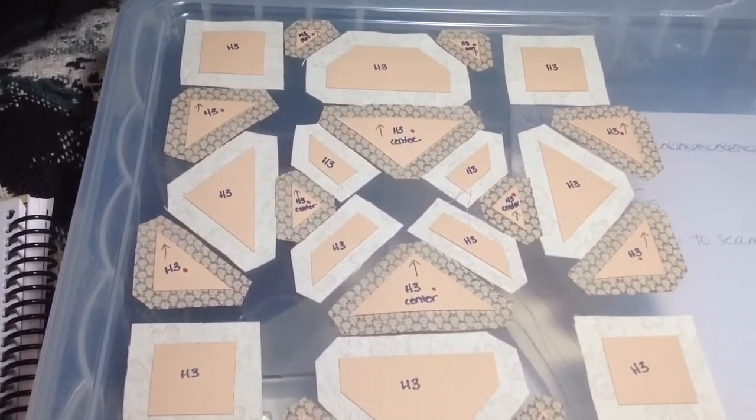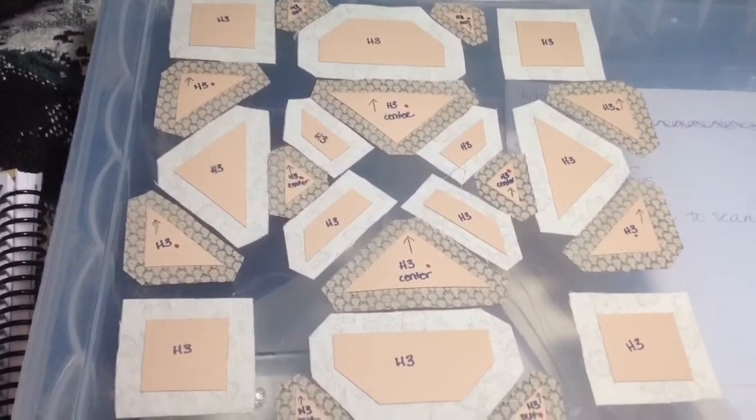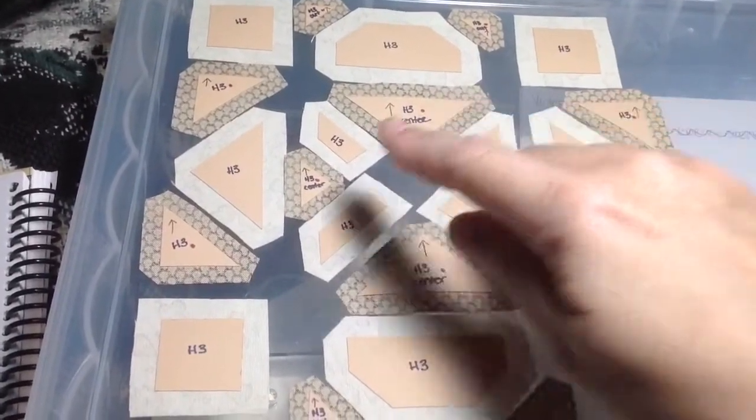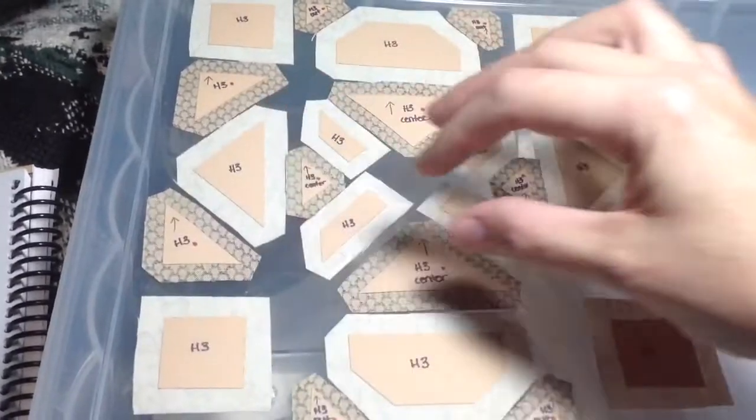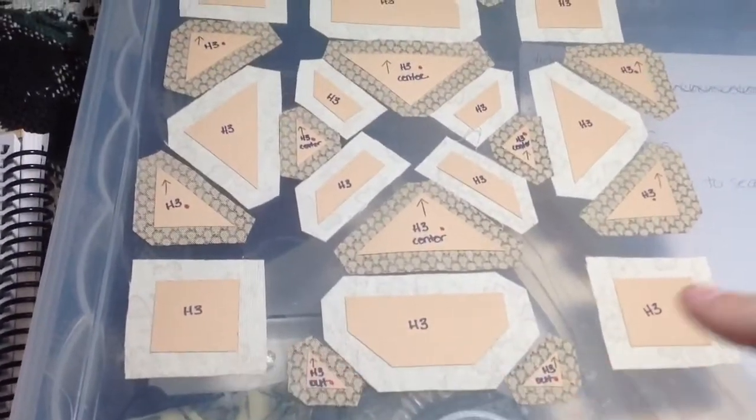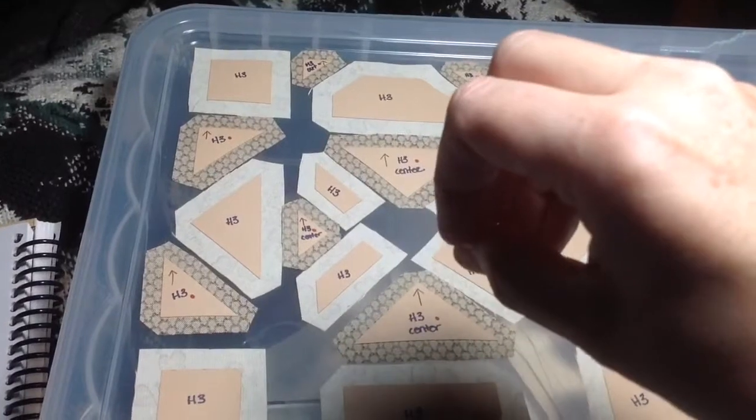So from an assembly standpoint, I'm going to start in the middle, and I'm going to assemble this section, and then I'm going to take these edges. So this is going to be a row, I'm going to treat this as a row, and this as a row, and then connect the three.